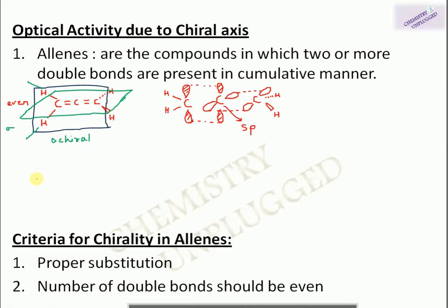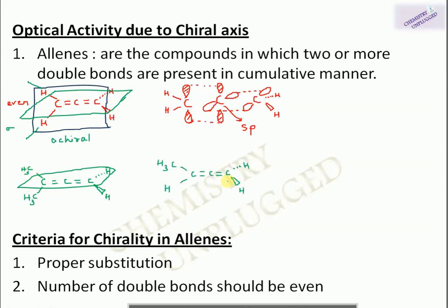If we place two methyl groups on one end, the allene is again achiral because the plane containing the two hydrogen atoms can divide it into two equal halves. Similarly, if only one methyl group is on one end, the allene can also be divided into two equal halves — the plane containing methyl and hydrogen bisects it — so it is also achiral.